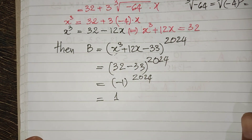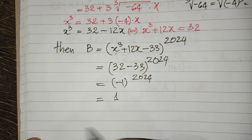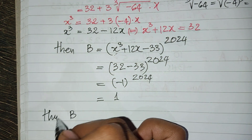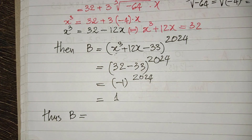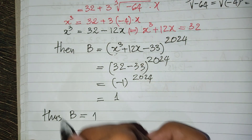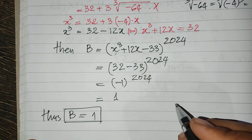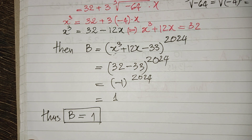Now we get the value of b: b = (h³ + 12h − 33)^(224) = (32 − 33)^(224) = (−1)^(224) = 1. So b equals 1 is our solution. If you like my videos, please don't forget to subscribe to my channel for more exciting videos. Goodbye!